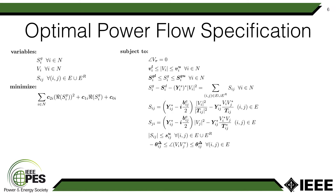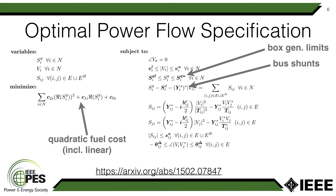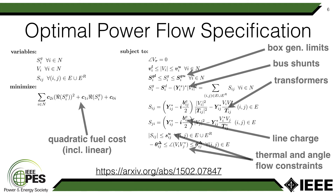Let's look at what problem specification this repository is designed for. It's for this particular Optimal Power Flow problem. I don't really have time to go into all the details of this notation, but if you want additional details you can go to this particular paper where it's all derived in great detail. Briefly: you have quadratic fuel costs on the active power of the generators, box-like constraints on generator active and reactive power output, bus shunts and Kirchhoff's current law, transformers and line charging in the branch model, and two types of line constraints — both a thermal limit and an angle limit. There are many alternate formulations for the OPF problem, but due to historical reasons this is the one adopted for this benchmark library.